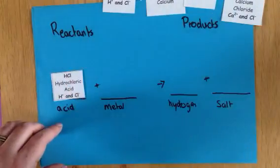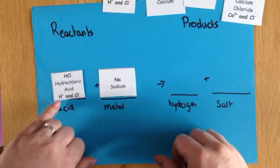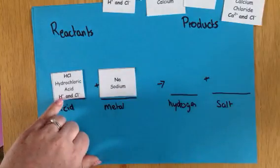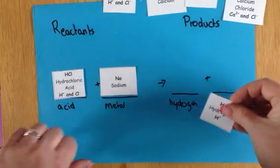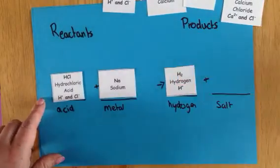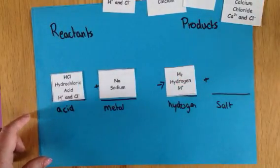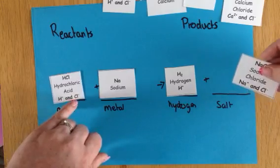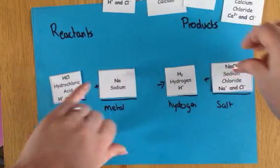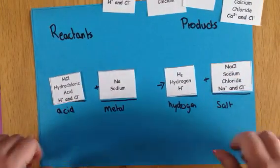So again we have hydrochloric acid and this time we're reacting it with sodium. Again we have our hydrogen ions here — as always, when we react an acid with a metal we're going to get our hydrogen gas being released. And then the two things that are left over, the chlorine and sodium, are going to react together to make sodium chloride.